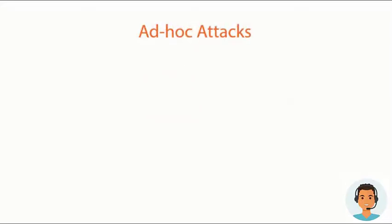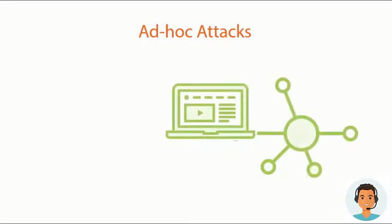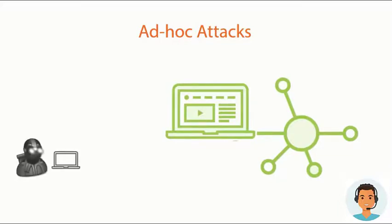Another type is referred to as an ad hoc attack. A lot of devices like laptops have both wi-fi and ethernet built into them. A user connects via their RJ-45 connection, and in an ad hoc attack — ad hoc meaning a one-to-one relationship — the attacker creates an ad hoc connection to your laptop and is then able to pass through and gain access to the network.